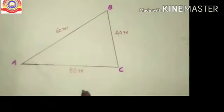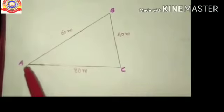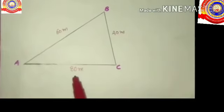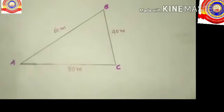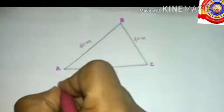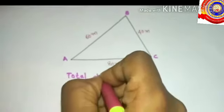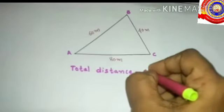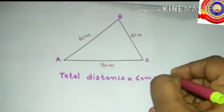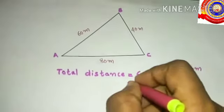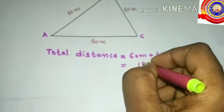Here is a triangular path. The object starts its journey from A and reaches C through B. The distance from A to B is 60 metres, from B to C is 40 metres, and from C to A is 80 metres. The total distance travelled is 60 + 40 + 80 = 180 metres, as the object returns to the same position A after reaching C.